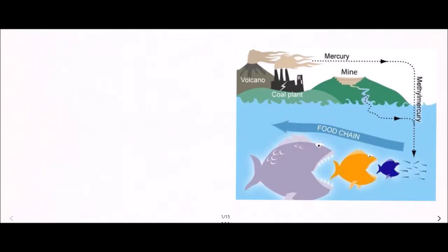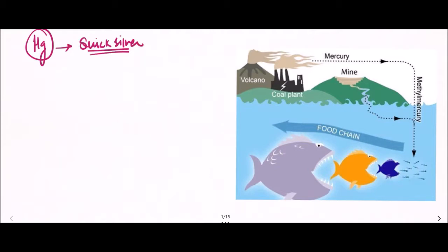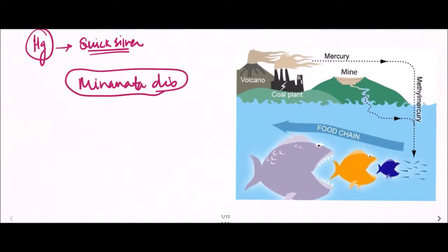Hello friends and welcome to Forensic Extract. This is the third video about metallic irritants, in which we will cover mercury — also known as quicksilver. A famous example of mercury poisoning is the Minamata disaster, also called Minamata disease.